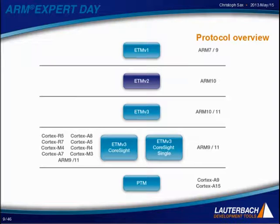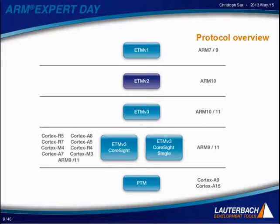Here we have an overview over the different trace macro cells that are used for the ARM core families. For the ETM, we have three versions: ETM v1, v2, and v3. And for the PTM, we have a single version. As can be seen for the recently released core families, they either use the ETM v3 protocol or the PTM.